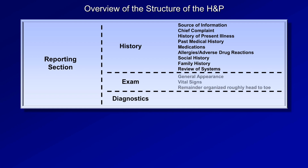The exam typically starts with a statement about the patient's general appearance, then the vital signs, and the remainder of the exam is usually organized roughly head-to-toe, other than the neuro exam, which for some reason is often listed last. The diagnostics subsection includes all labs as well as the results of any other relevant tests, including x-rays, CT scans, and EKGs.